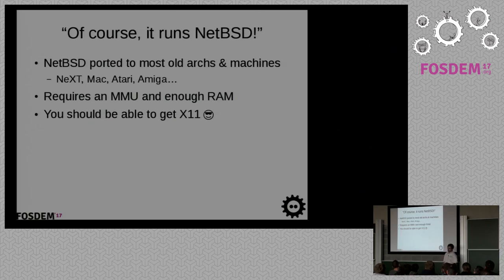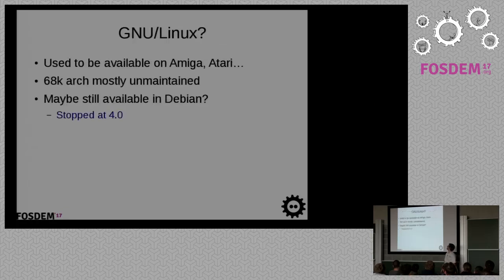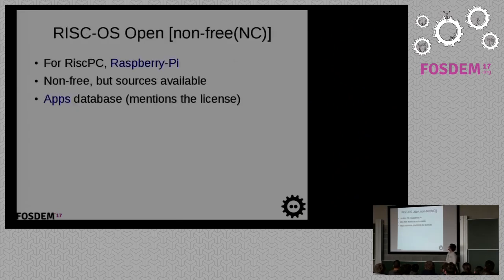GNU/Linux used to support those machines long ago — still does. Debian stopped officially supporting them, but you can get some archives. There's RISC OS, which isn't really free software. The source code has been published but it's a non-commercial license. Their application database is nice because it says if something is shareware, freeware, or GPLv2, so you can actually search for apps that are free software.